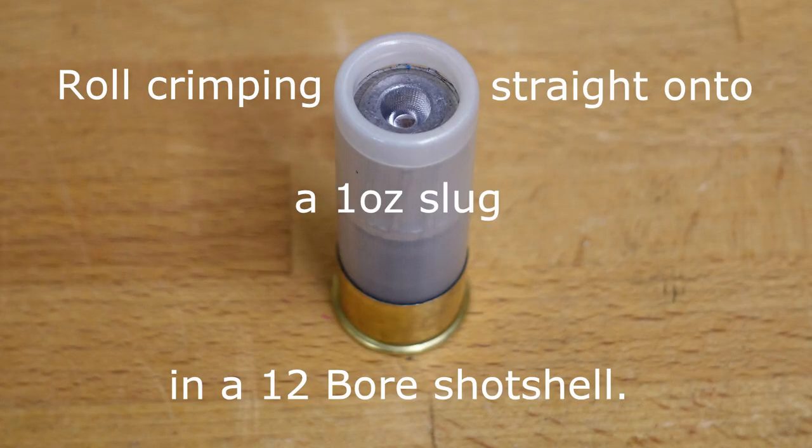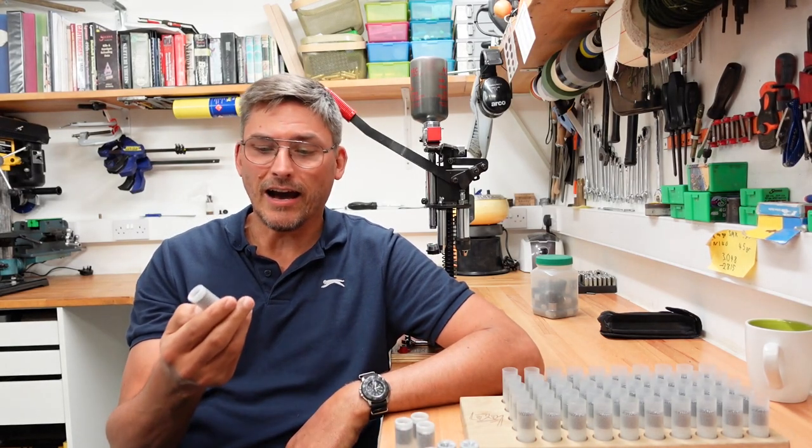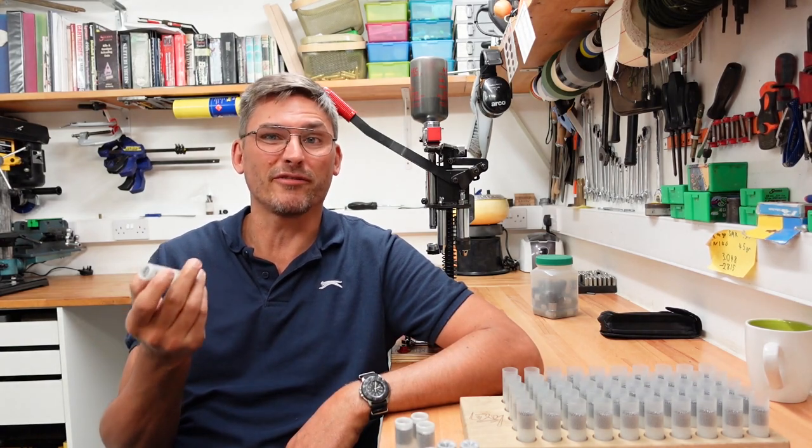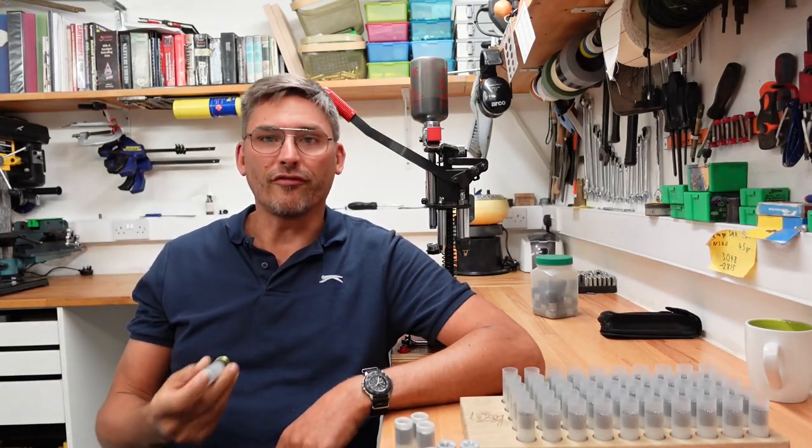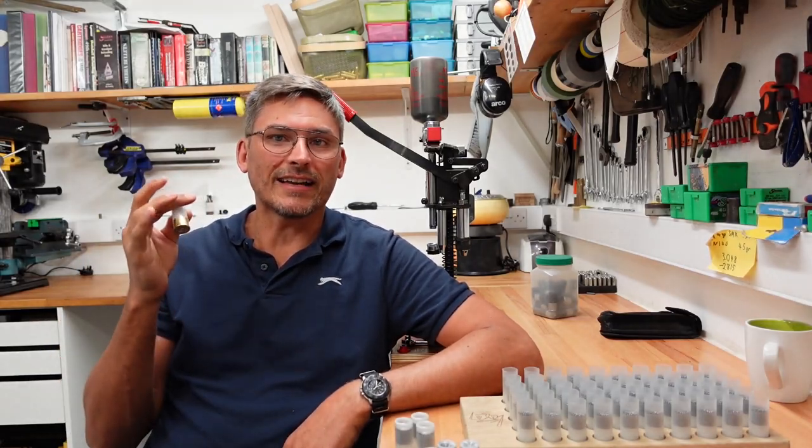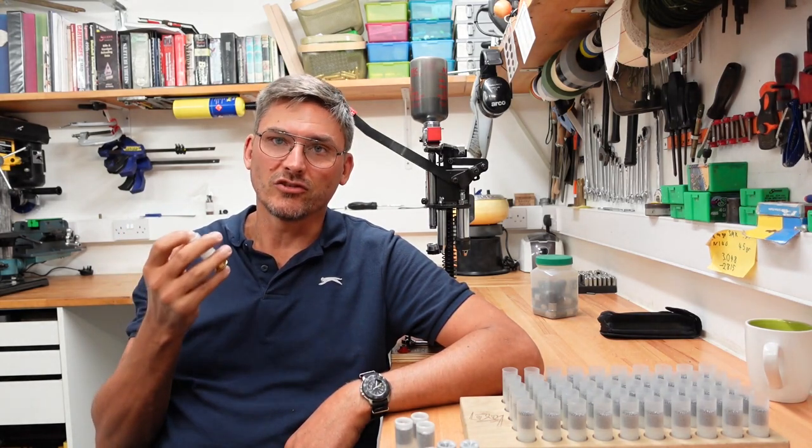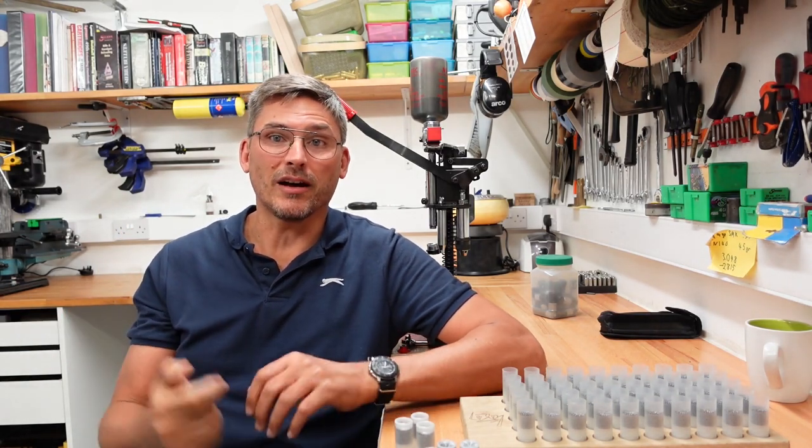The advantage with the roll crimp is that you can basically roll crimp to your heart's content. So effectively you could take half your shot shell and turn it into crimp if you wanted to. You are a lot more flexible in what you stuff inside this, as long as you have sufficient roll crimp on the edge that it doesn't come apart.